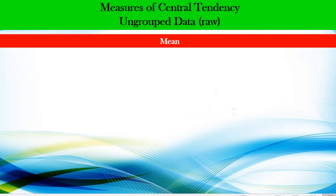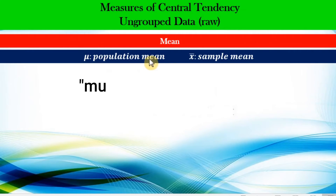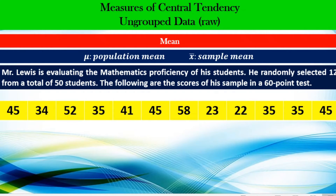An example for the mean. When we are computing the mean, we need to identify first which of the two we are computing: is it a population mean or a sample mean? The symbol for the population mean is the Greek letter mu (μ), and if we are computing from a sample, the symbol that we use is x-bar. Let us identify first, from a given problem, whether we are going to compute the population mean or the sample mean.